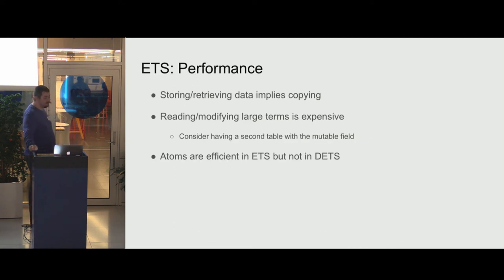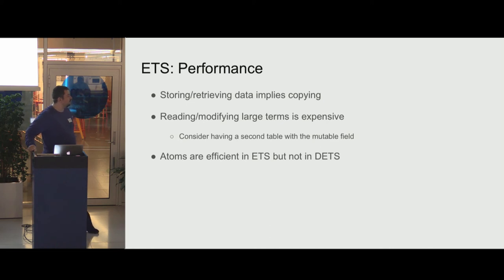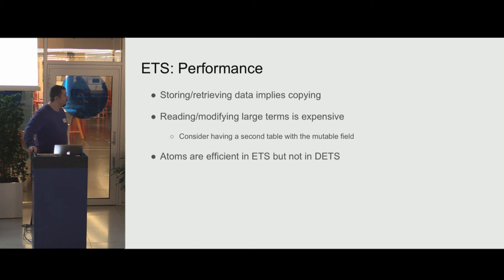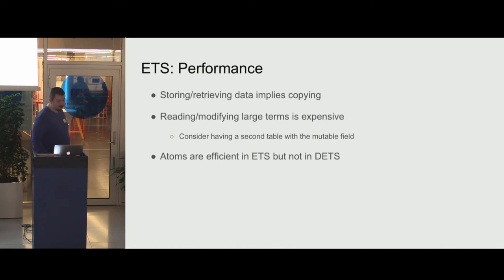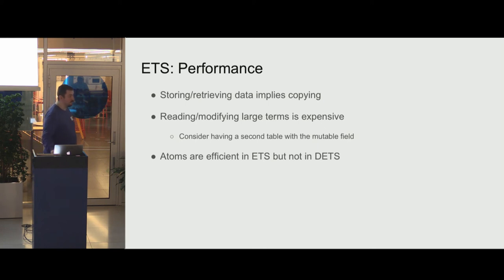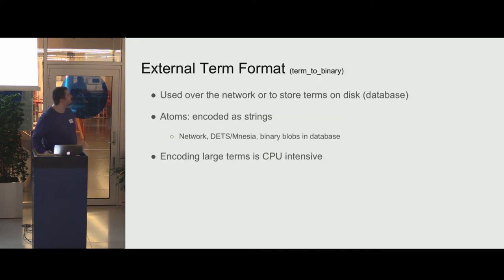ETS copies all the data you put into it and all the data you read from it, so having very big values in ETS or big rows is expensive. If you have a big data structure in each row but only modify a small piece, consider creating a second table for the mutable field to avoid copying the full structure in and out all the time. It is efficient to store atoms in ETS in memory since they occupy only one word, but when written to disk they explode because atoms are represented as strings.